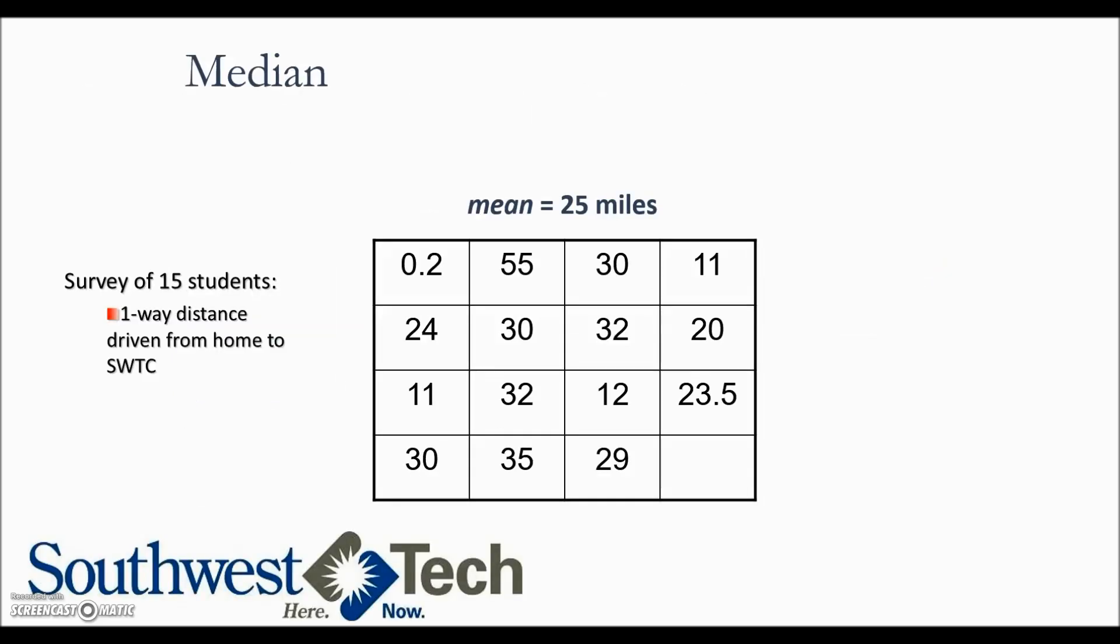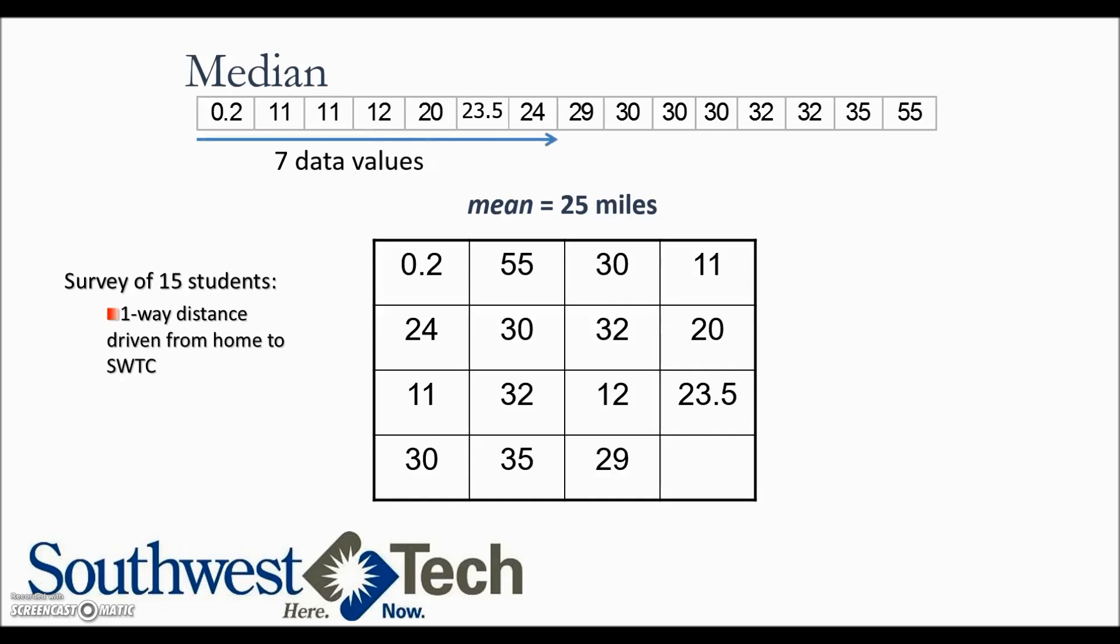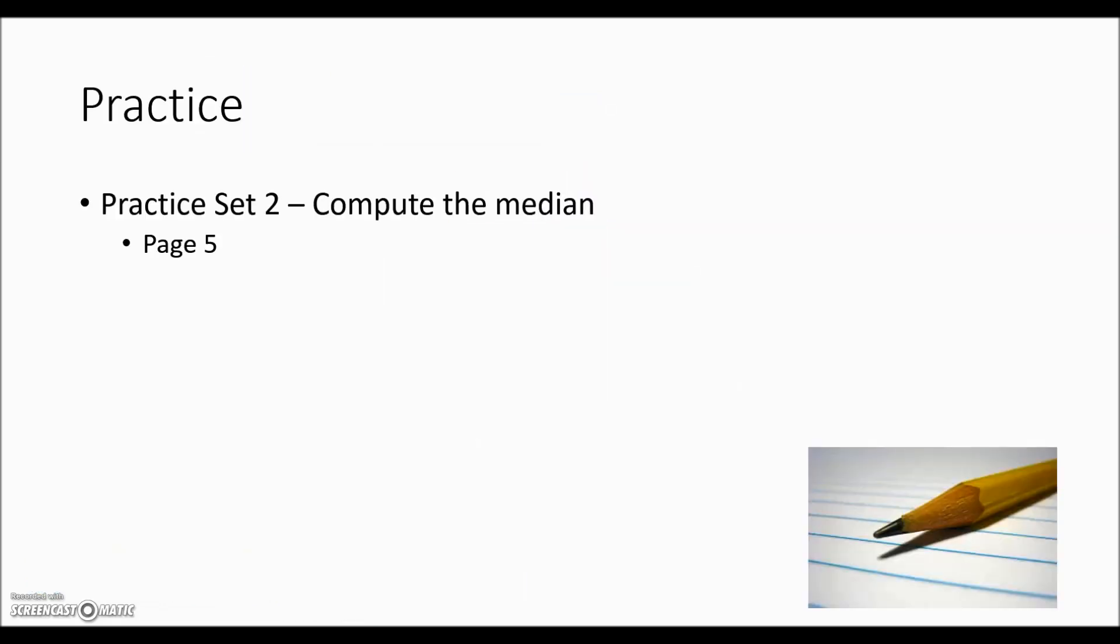Back to our survey of commuting distance. First if we're after the median we would need to put these numbers in numerical order. We have seven values below the middle, seven values above the middle and there's the middle or the median value of 29. For additional practice on median calculations turn to page five.